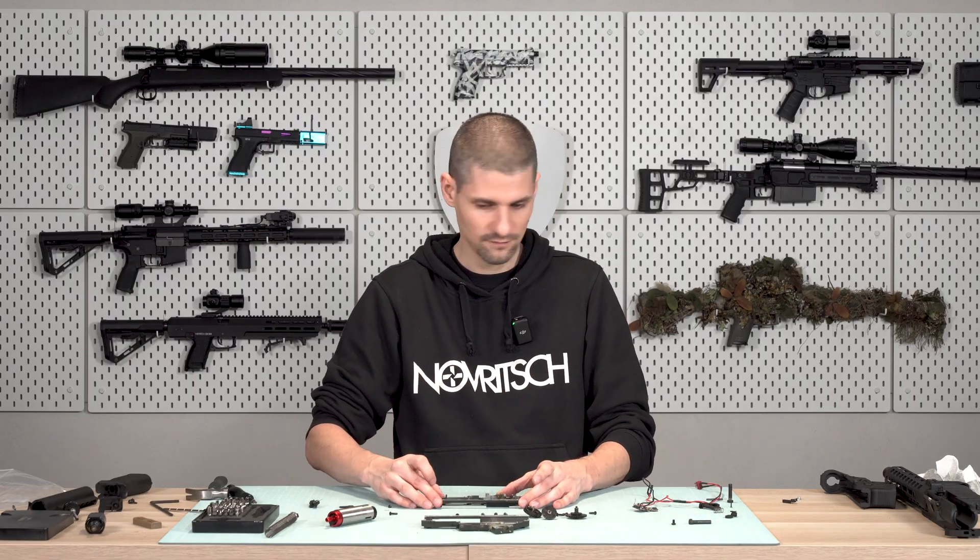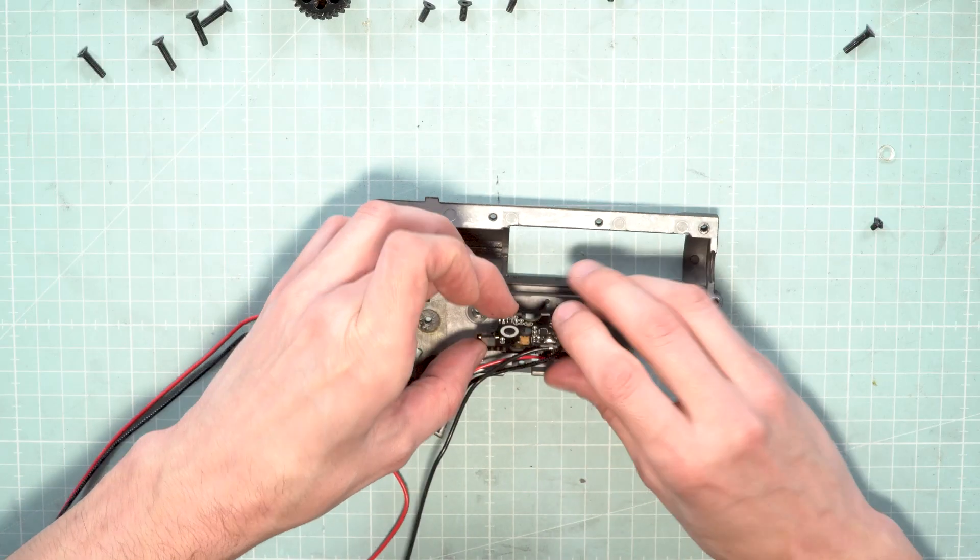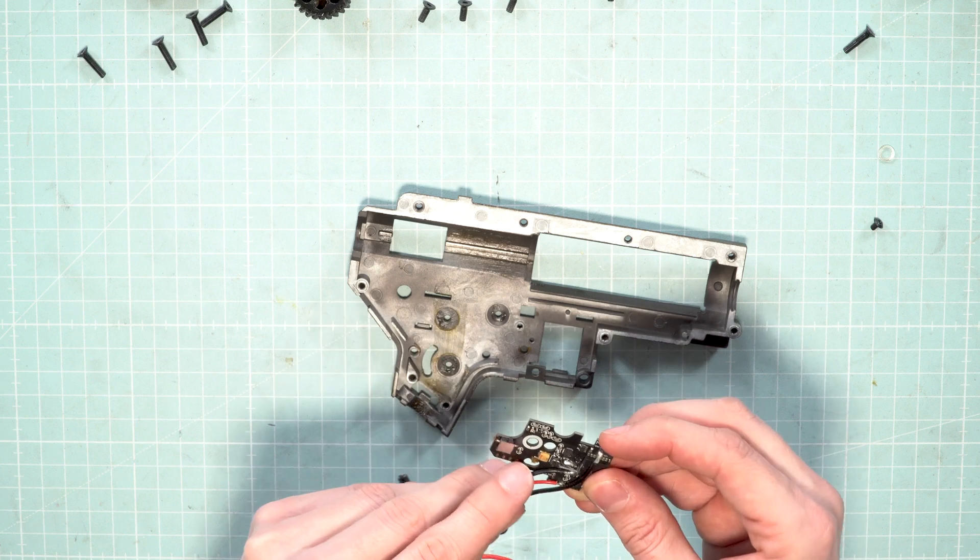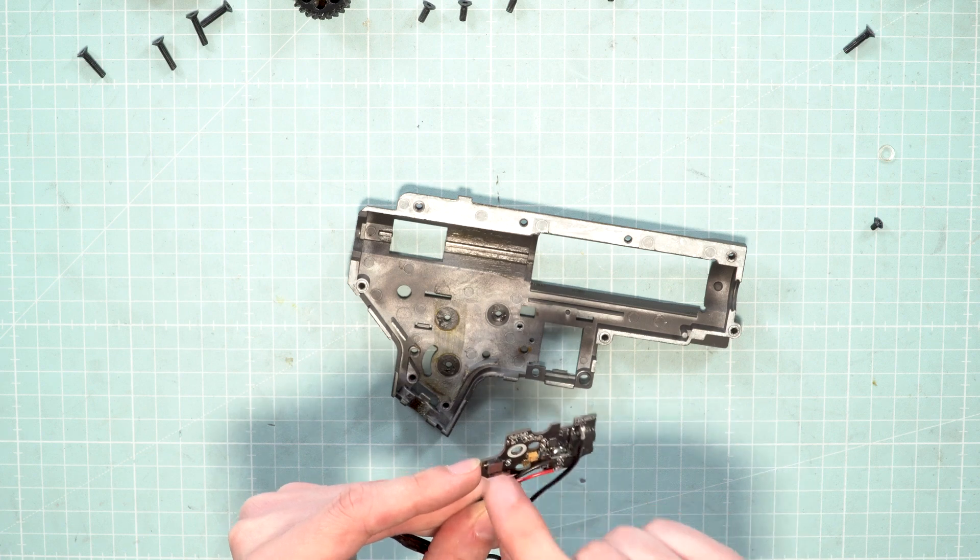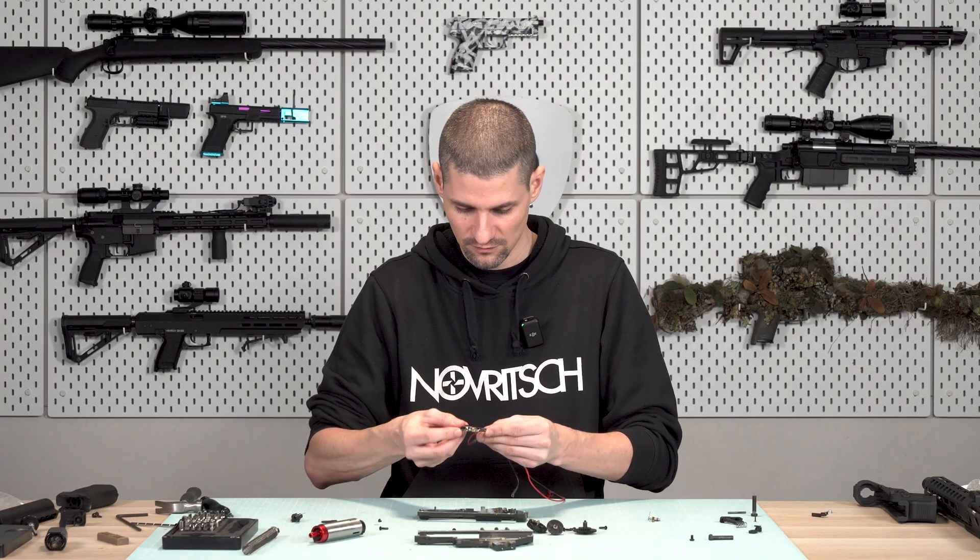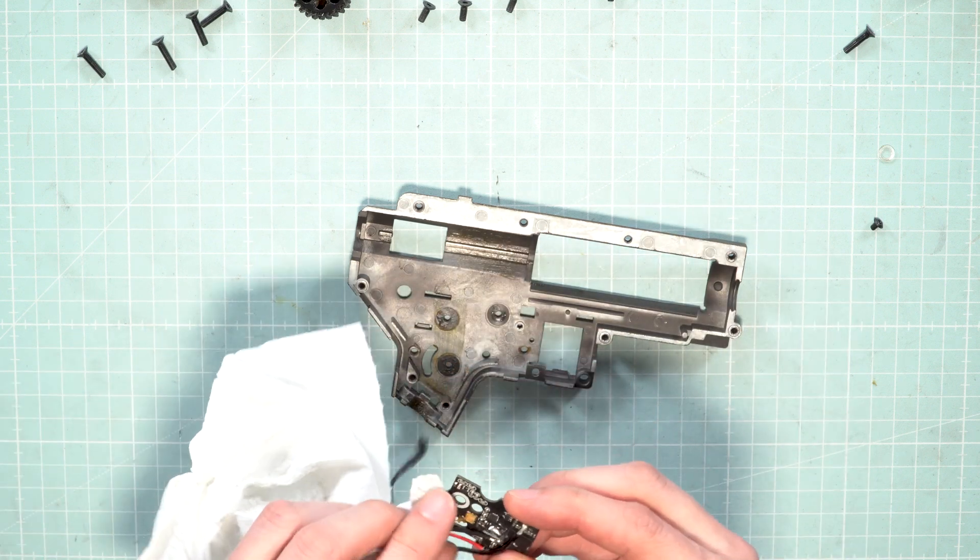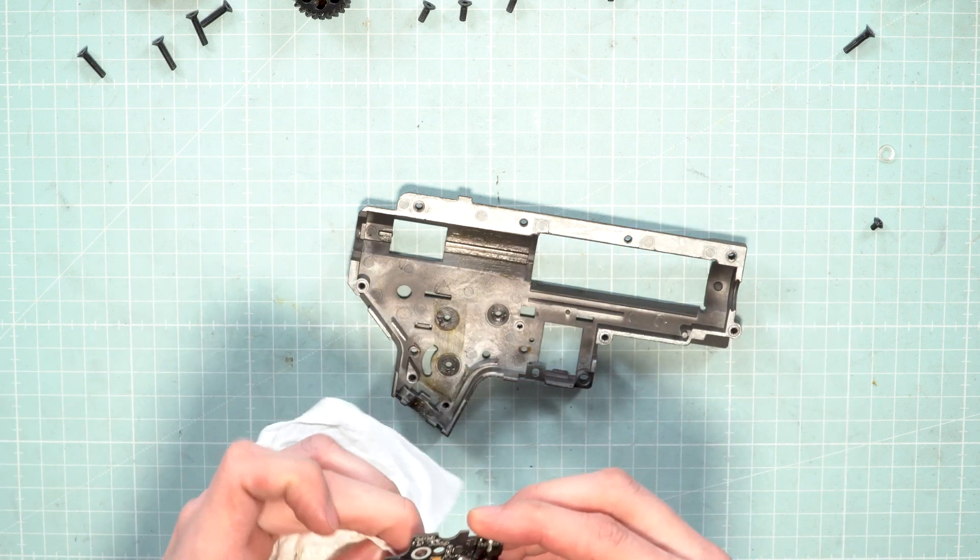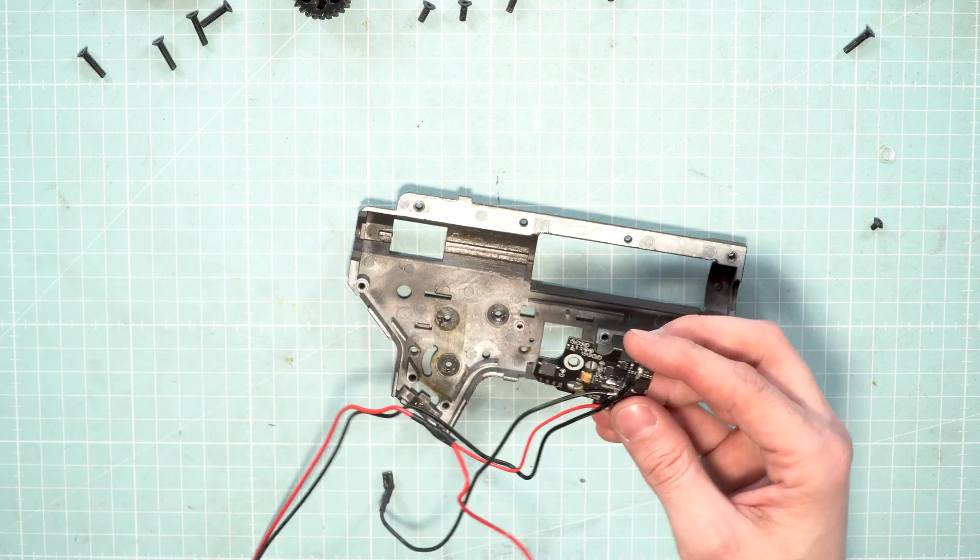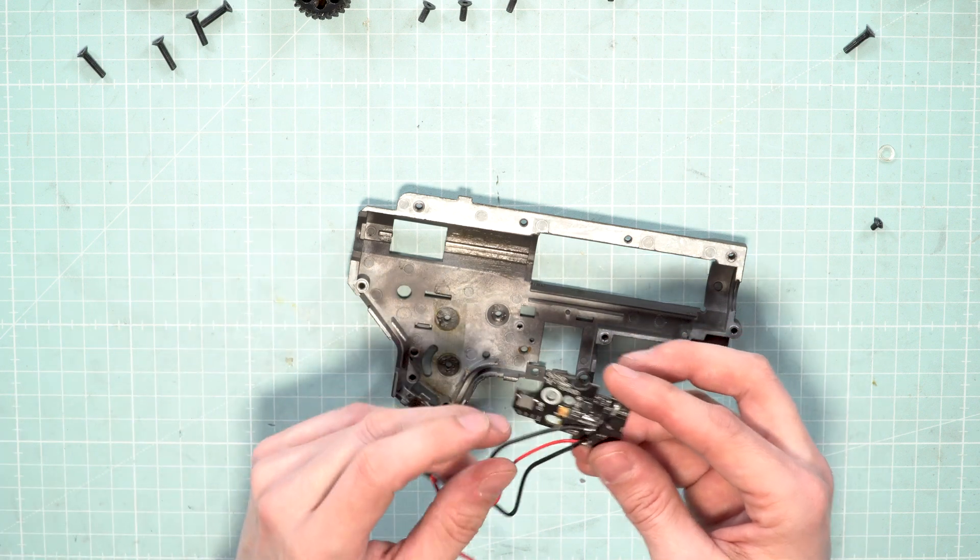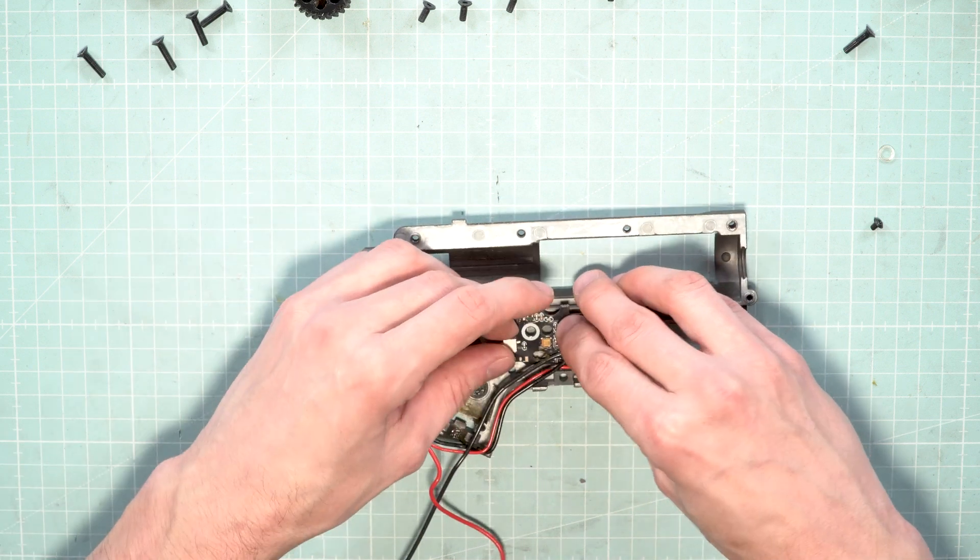We now take the gearbox and start with the ETU first. Place the ETU, and as you can see, there is a little bit of grease over here. Make sure there is no grease on the sensitive components like the microswitches. It should not be a problem if grease is on top of it, but you can always wipe it off. If you find any grease on the microswitches, use degreaser or alcohol to completely remove it to prevent any interference in the ETU's operation.